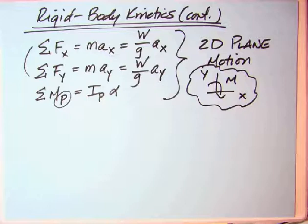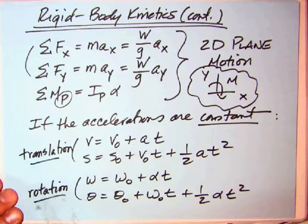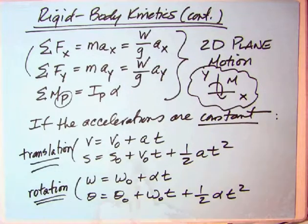So now, once you find these accelerations, AX, AY, and alpha, if they are constant, and I can imagine that they're going to have a problem that they are not, then you can use the following kinematic relationships to find time or other things. So if the accelerations are constant, the A's or the alphas, for translation, we're back to translation plus rotation. I hope you see. V equals V0 plus AT, if you need the final velocity. Final position, S equals S0 plus V0T plus 1 half AT squared. So if you start from rest at a measuring point, the distance is 1 half AT squared.